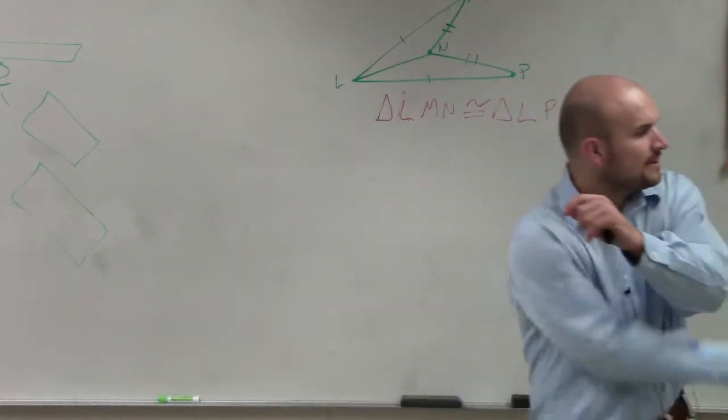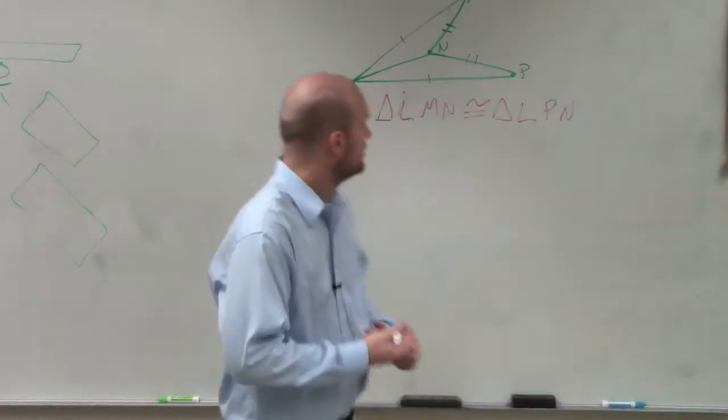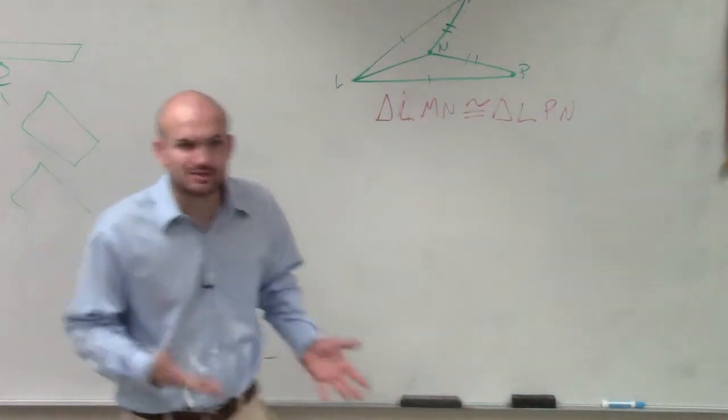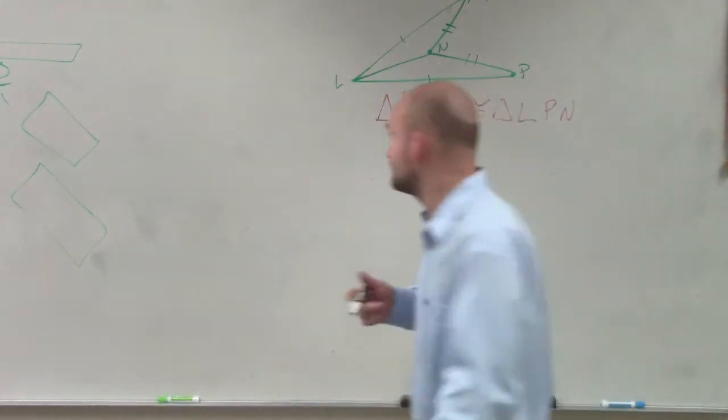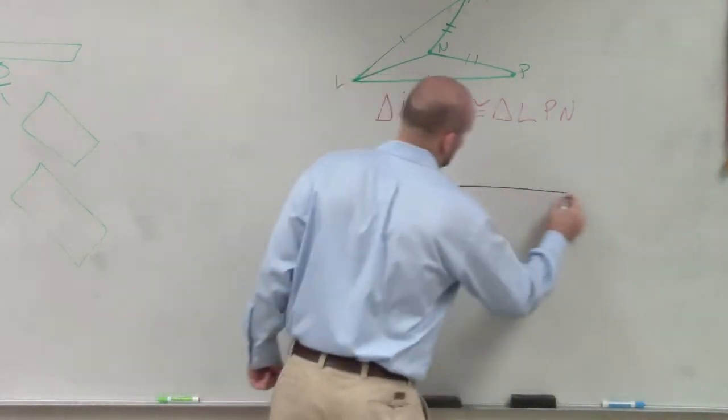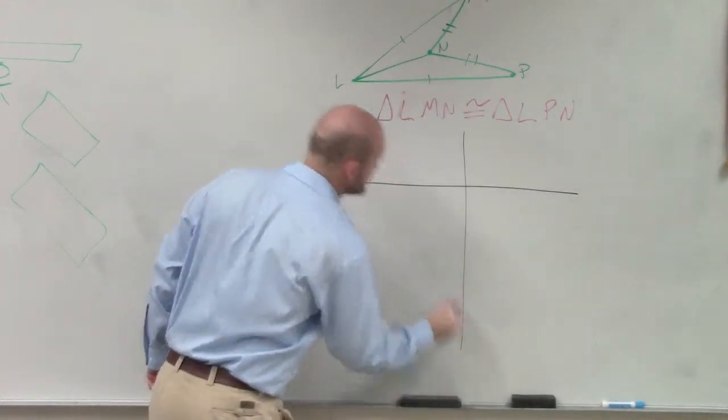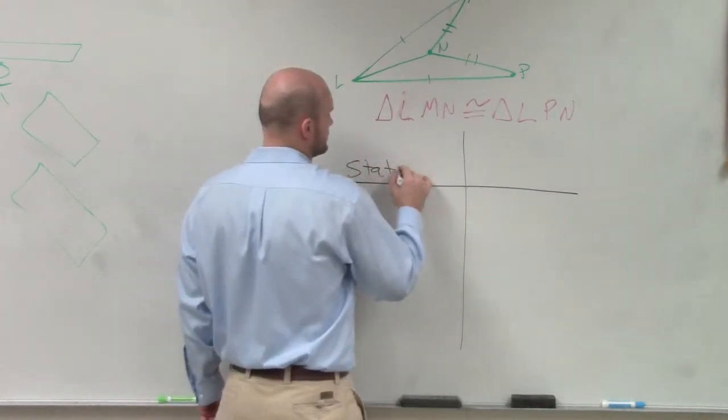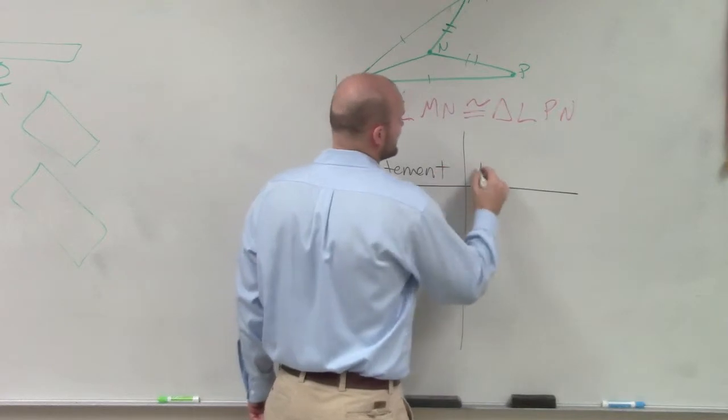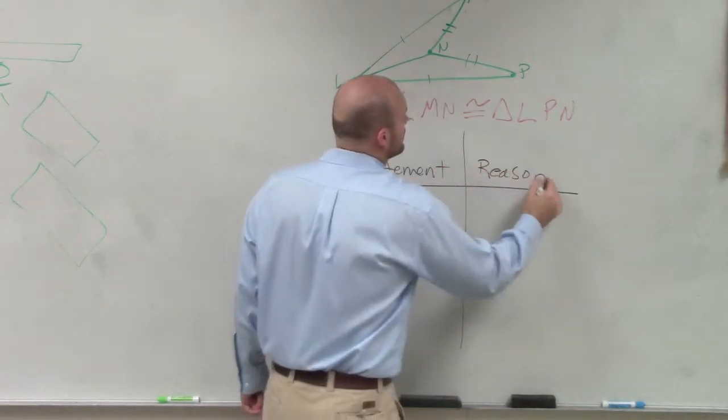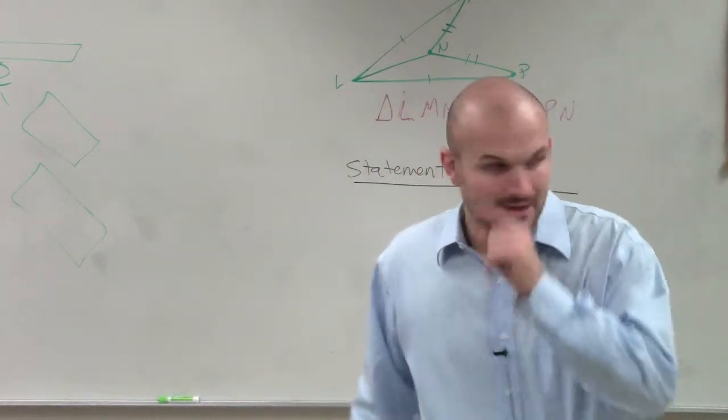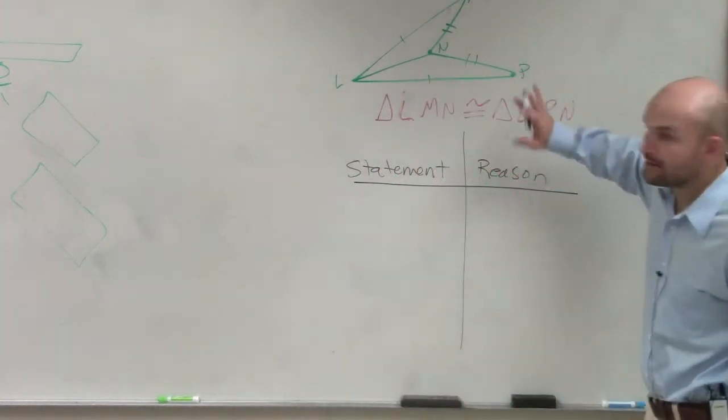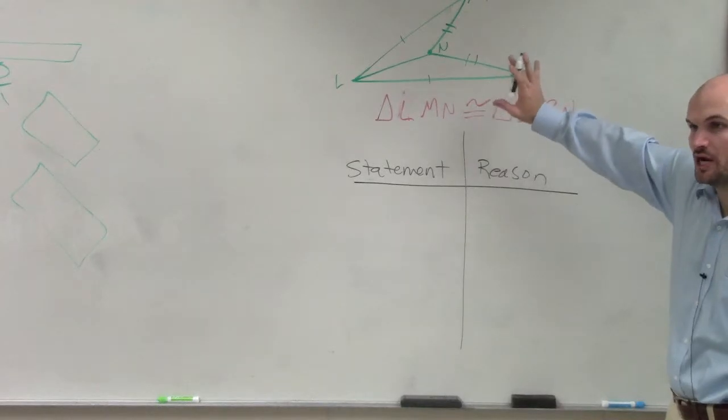So again, when we're doing this, what we need to do is take down a two-column proof and write down everything that we have been given. So I write this down into a statement and a reason. Everything that we're going to state, we're going to provide a reason. Now they were already giving you some of this information up here.